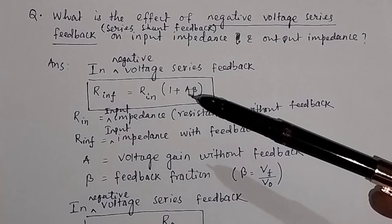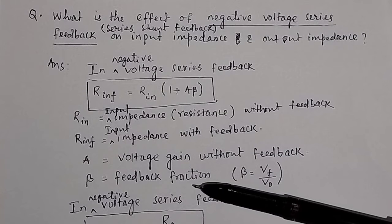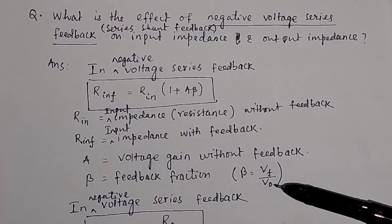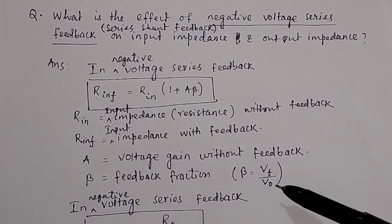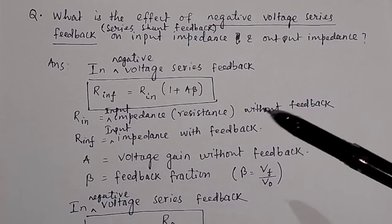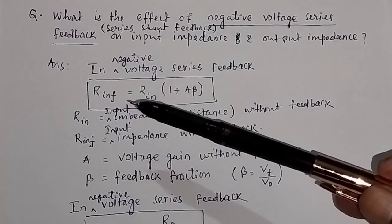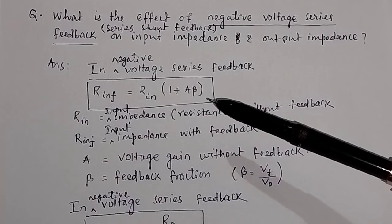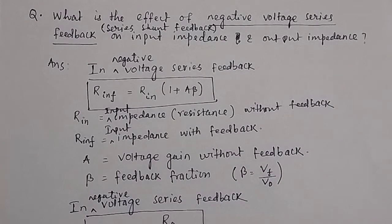In negative voltage series feedback, the input impedance after feedback equals the input impedance multiplied by (1 + Aβ). I will show you how to derive this relation later. The output impedance with feedback — written as ROFF or ZOF — will also be derived. From these equations you can see that the input impedance will increase in negative feedback, specifically in negative voltage series feedback.